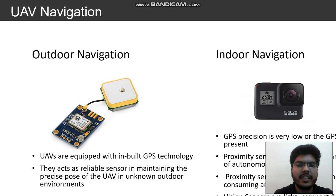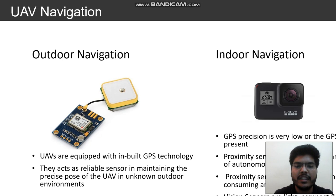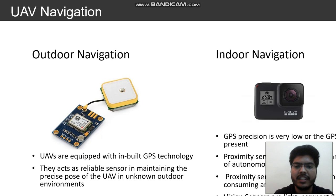UAV navigation basically consists of two parts: outdoor navigation and indoor navigation. In outdoor navigation, UAVs have inbuilt GPS modules that assist in navigation. Whereas in indoor navigation, GPS precision is very low or the GPS signal is not present at all. To counter this problem, proximity sensors and lidars are used, but they are very high power consuming and heavy weight devices, and you need multiple units to achieve autonomous indoor navigation.